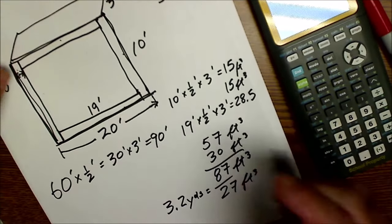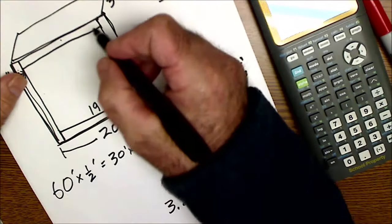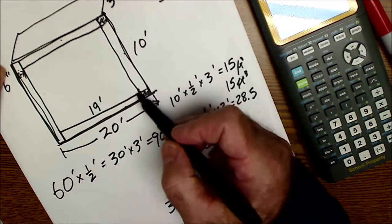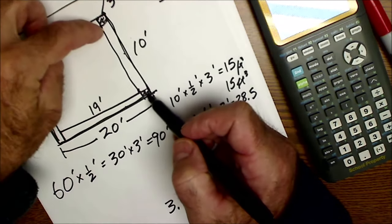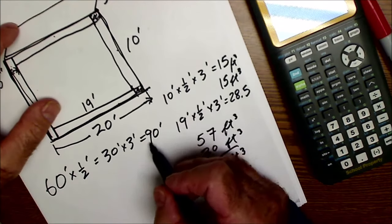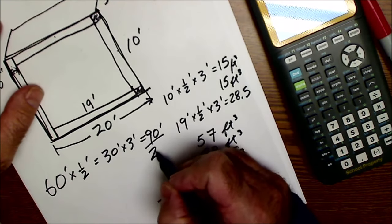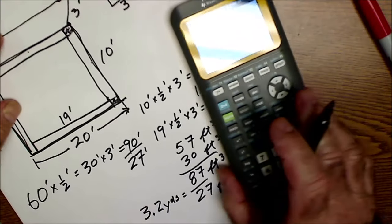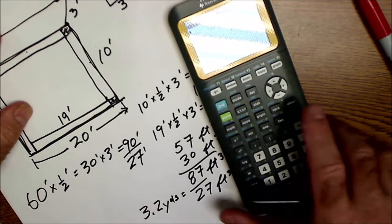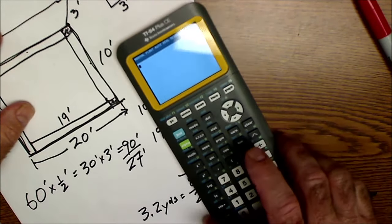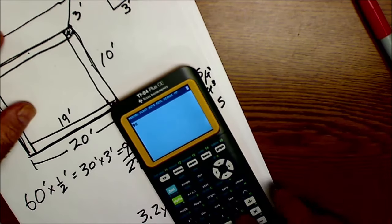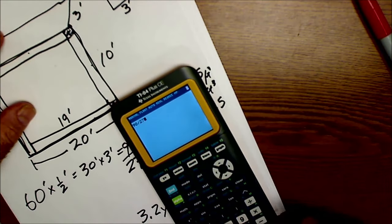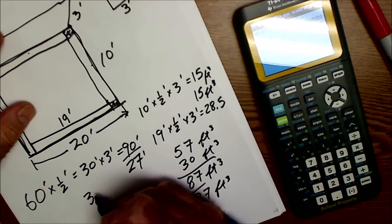So one problem with doing it this way is I double counted these little blocks right here in the footing, right? I counted them on the 20 foot section and the 10 foot section, but you'll see it's a pretty minimal count. So I'm going to take that 90 foot divided by 27 cubic feet, so I have 90 divided by the 27, and I get 3.33 cubic feet.